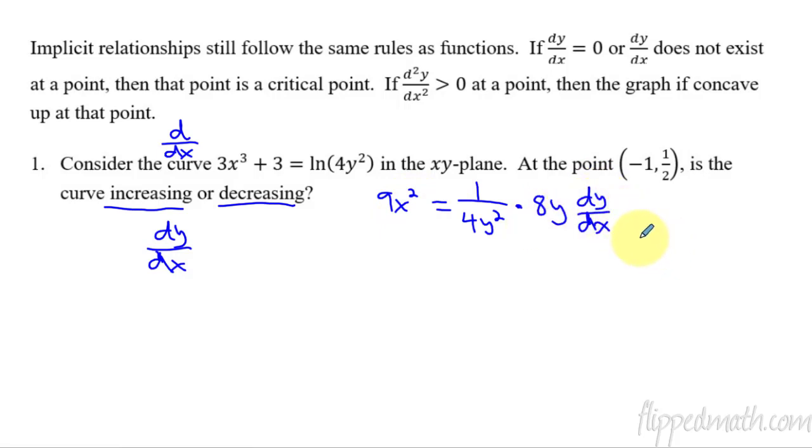So now what we could do, well, let's simplify this just a little bit before we start plugging numbers in. So 9x² equals, the 8 and the 4 will reduce to just 2 over 1, and then the y² and the y reduce to just 1y. That y cancels with one of those. And then dy/dx. So from here, we're just taking the point and plugging it in. We don't need to actually solve for dy/dx yet. Let's just plug in a point.